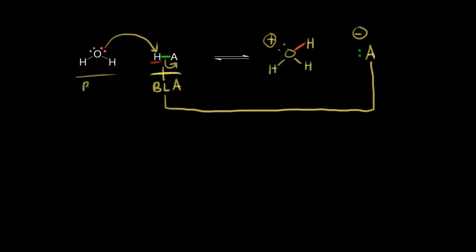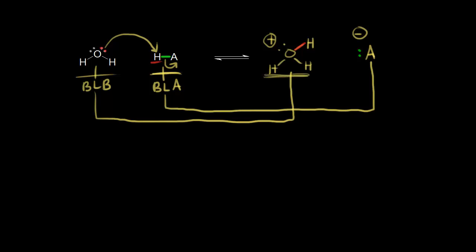Water, H2O, accepted a proton, so this is our Bronsted-Lowry base. Once H2O accepts a proton, we turn it into hydronium H3O+, so this is the conjugate acid. H3O+ is the conjugate acid, and A minus would be a base. So if you think about the reverse reaction, H3O+ donating a proton to A minus, then you would get back H2O and HA.